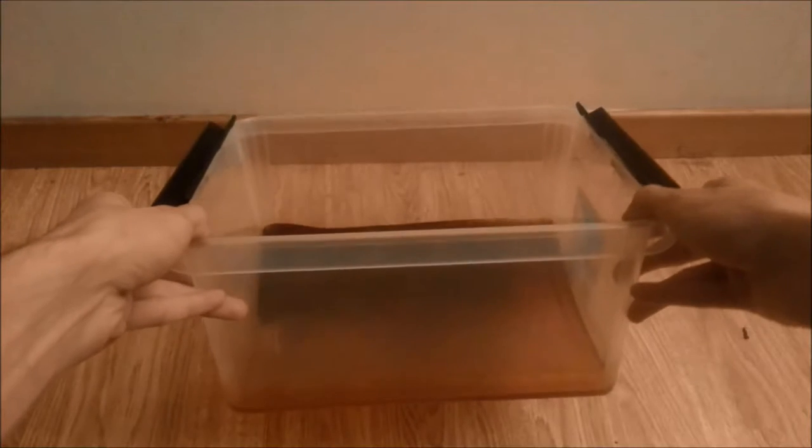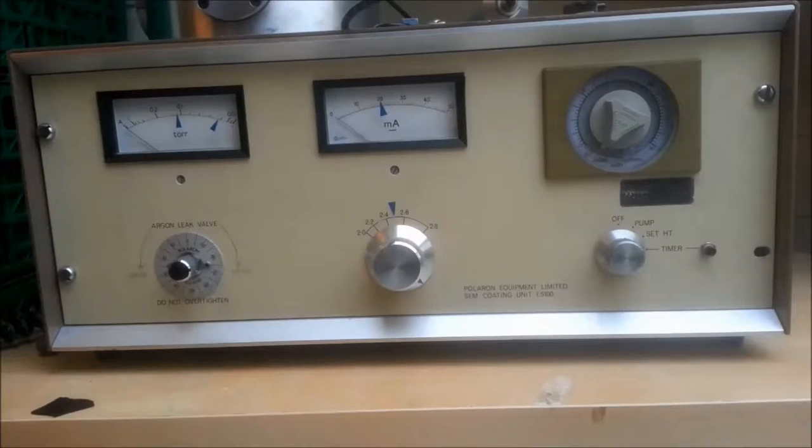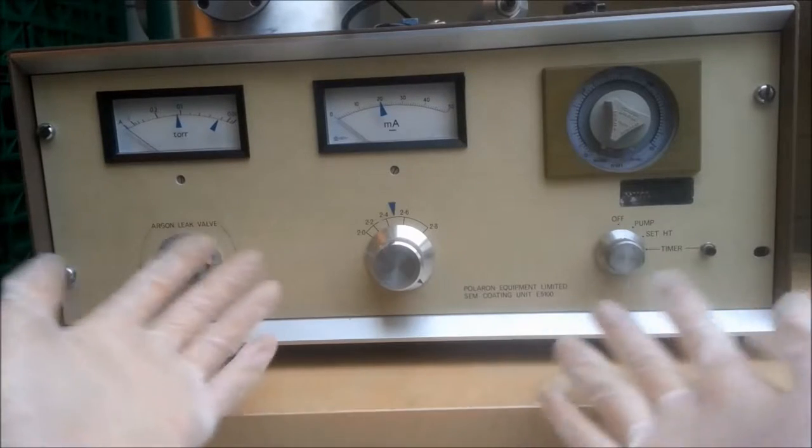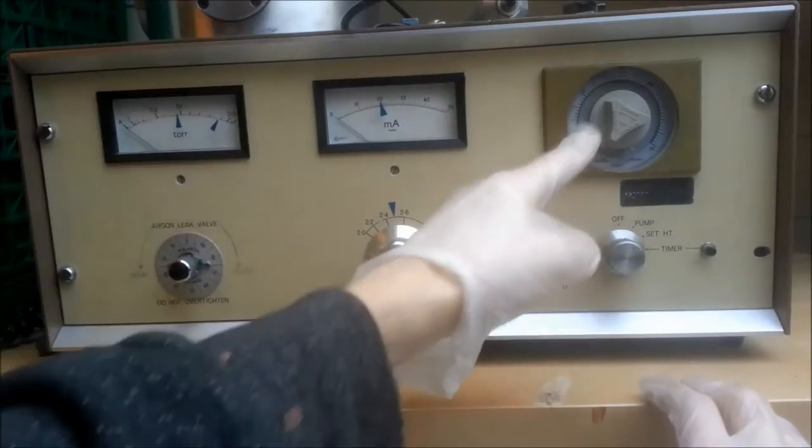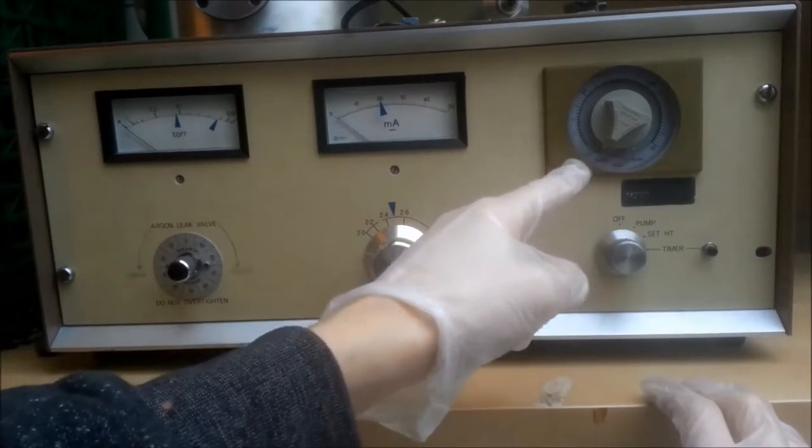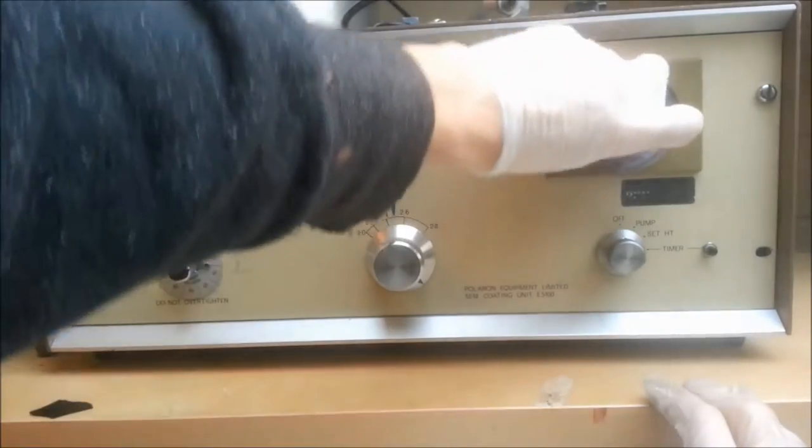For now we shall be content with having a look at the E-51. And we start with the front panel. And we can clearly see that this is a unit so simple your grandma could operate it. It even has a kitchen timer. For real, that is a mechanical timer used to switch the high voltage.